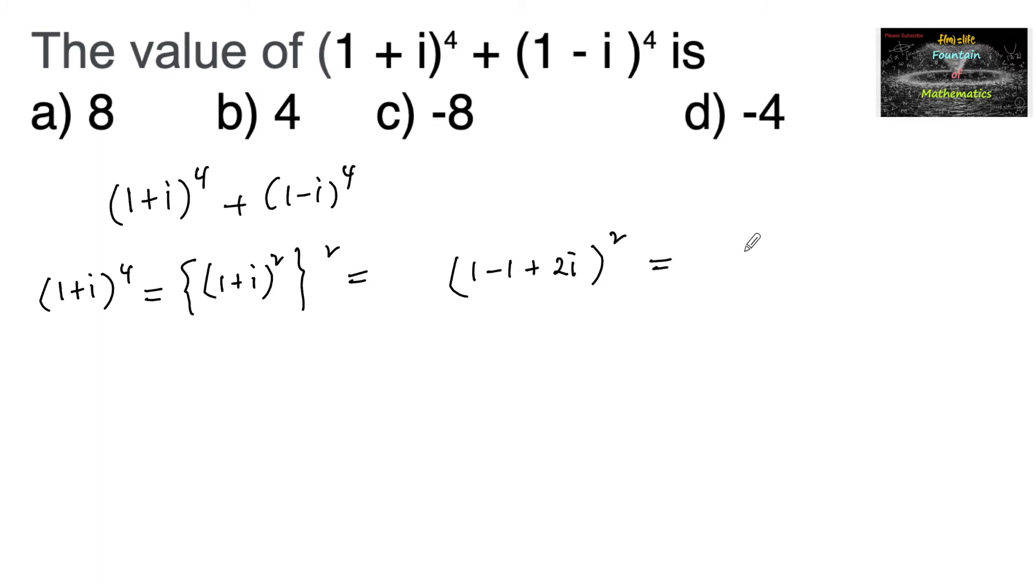Which is equal to 2i whole square, that is 4i square. And since i square is equal to minus 1, we can give the answer minus 4 for (1 + i) whole power 4.